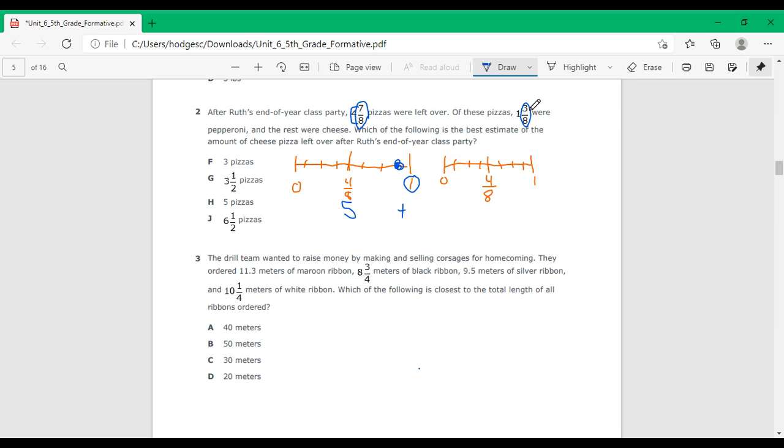Three eighths is my second fraction. Plot that on my number line. And it is closer to four eighths, which is equal to one half, because four is half of eight.